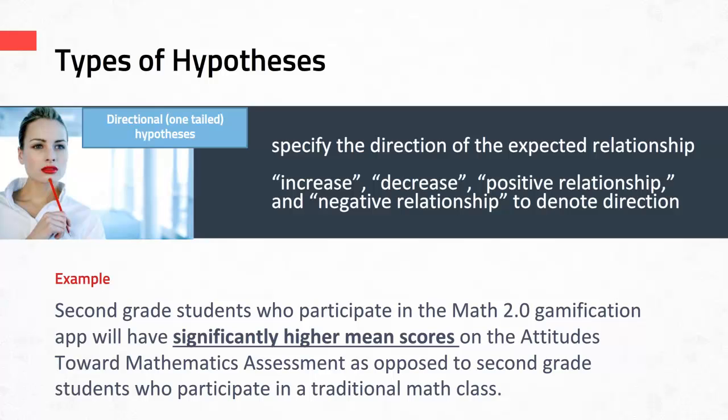A directional research hypothesis requires a one-tailed statistical analysis — that's why you see one-tailed in parentheses. A non-directional requires a two-tailed statistical analysis. When we talk more about analysis in later tutorials, we'll come back to this. This demonstrates that a function of a hypothesis is to provide a framework and direction for collecting and analyzing data — if you propose a directional research hypothesis, that directs the type of analysis you're doing.